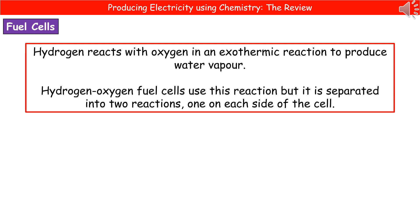If we take hydrogen and react it with oxygen in an exothermic reaction we produce water vapour. We use a hydrogen oxygen fuel cell to actually carry out this process but we've separated it into two reactions, one occurring on each side of the cell.